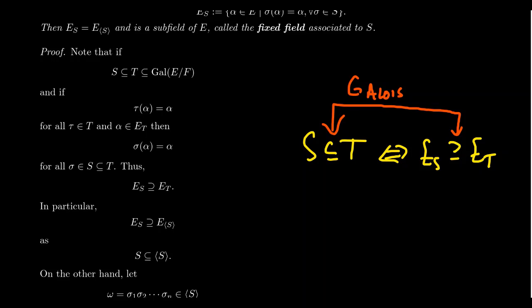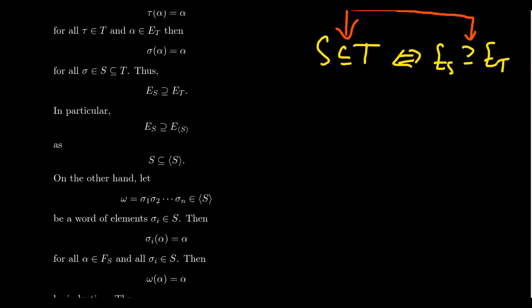Getting back to the proof: this is true for arbitrary sets S and T. In particular, if we take T to be the subgroup of the Galois group generated by S, that will necessarily be larger — or at minimum equal if S is already a group. So S is contained in the subgroup generated by S, which gives us the first direction: E_S contains E_{<S>}.